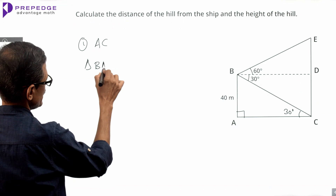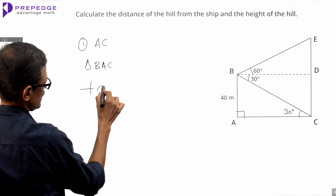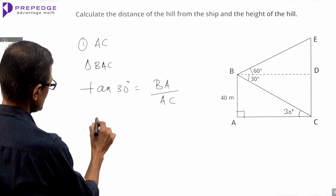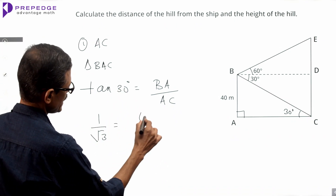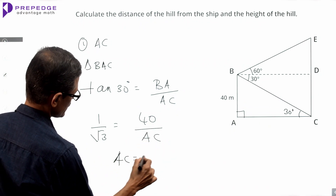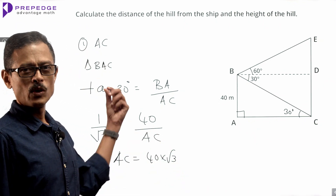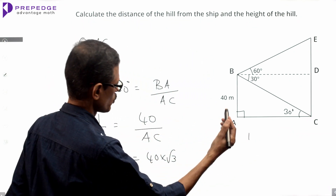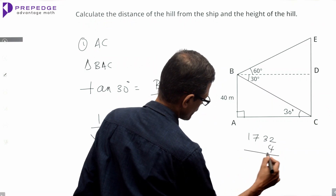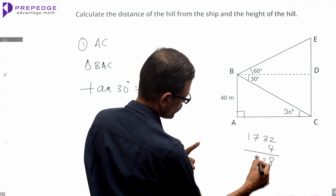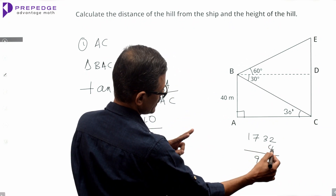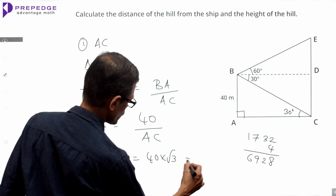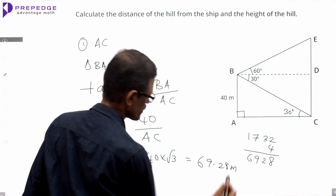Step 1: Compute the value of AC. In right triangle BAC, tan 30° equals opposite side BA divided by adjacent side AC. Tan 30° equals 1 over root 3, and BA equals 40, so AC equals 40 times root 3. That gives AC equals 40 times 1.732, which equals 69.28 meters.